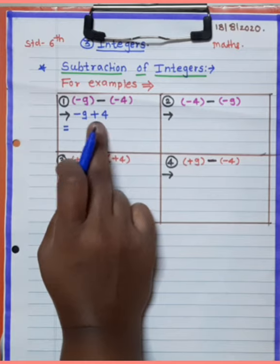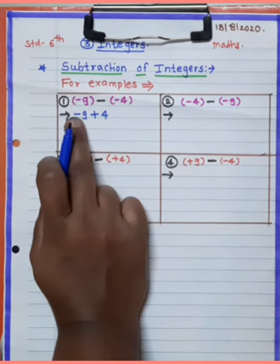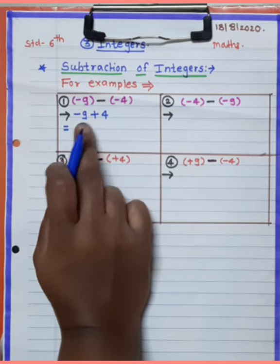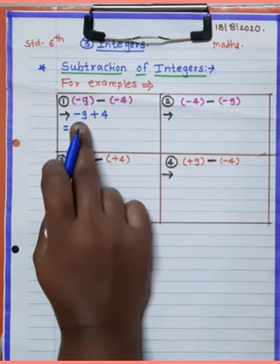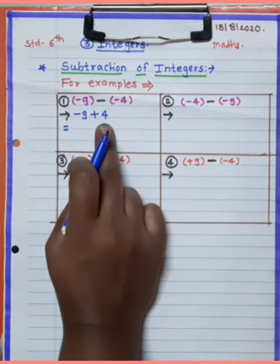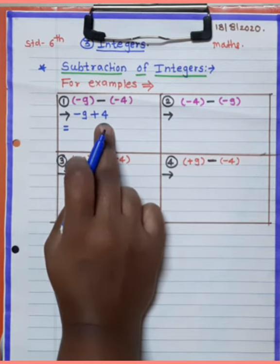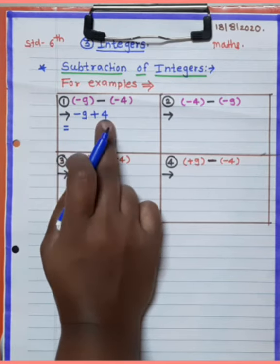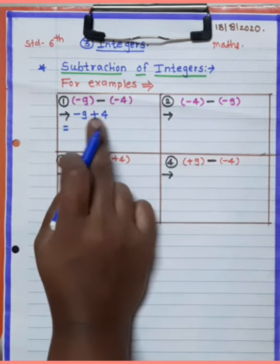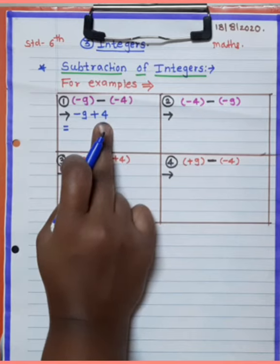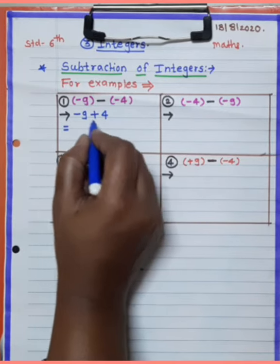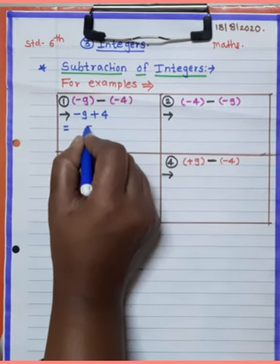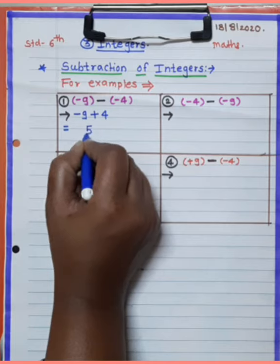Now with one negative number and one positive number in subtraction: minus plus minus becomes minus. It is 4 minus 9. Plus minus minus — that is 9 minus 4.